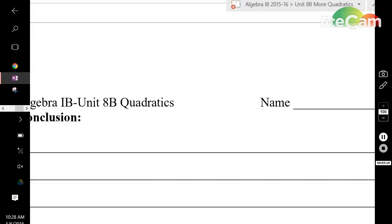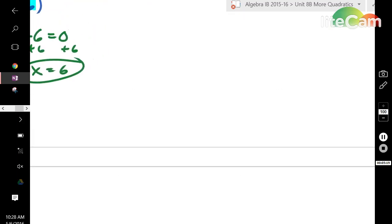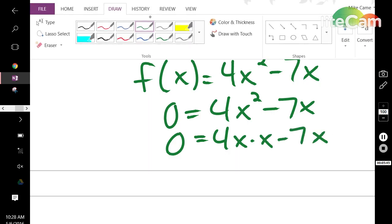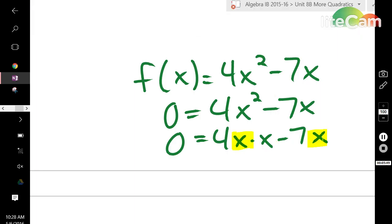One more thing. If we have, for example, f of x equals 4x squared minus 7x. First, set it equal to 0, of course. And then, find common factors. But, 4 and 7 don't have a common factor other than 1. So, you're going to leave it just like that. And, you can't factor anything out except for an x. And, that's okay.